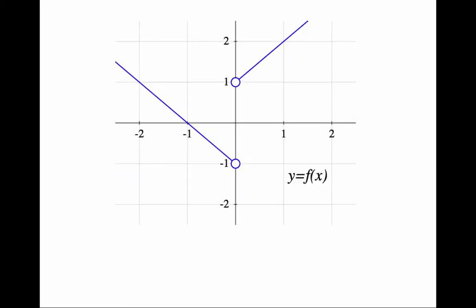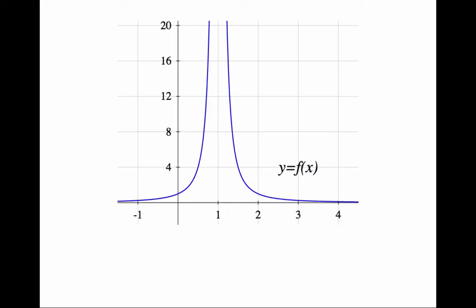This example is different. It has a jump, so I cannot sketch it without lifting pen from paper either. Neither can I this one, because it has a vertical asymptote.